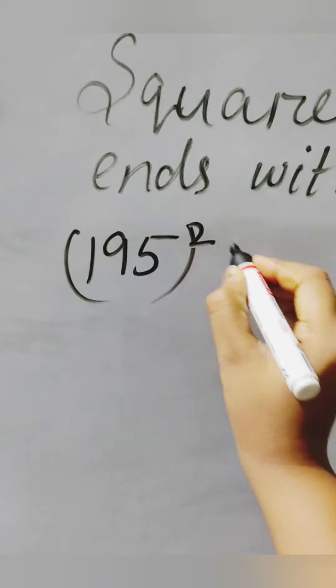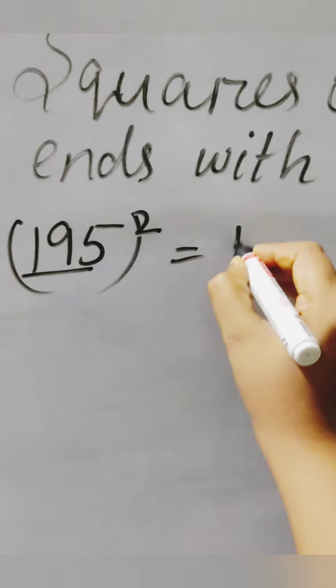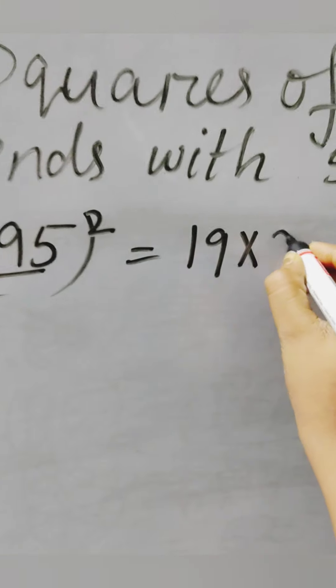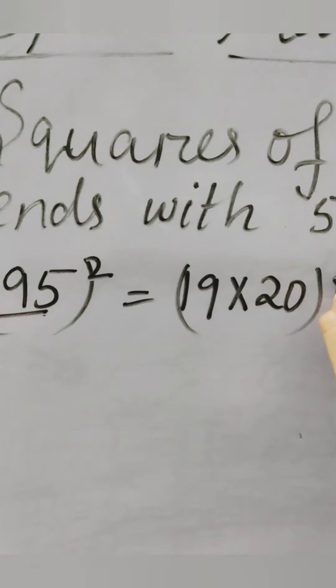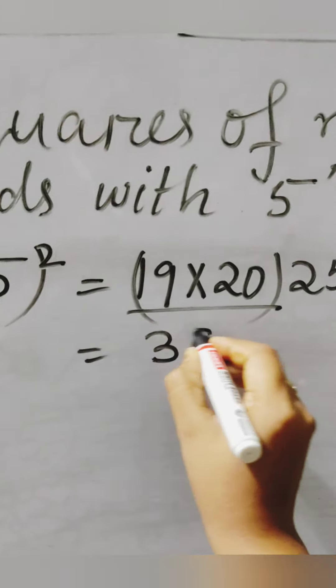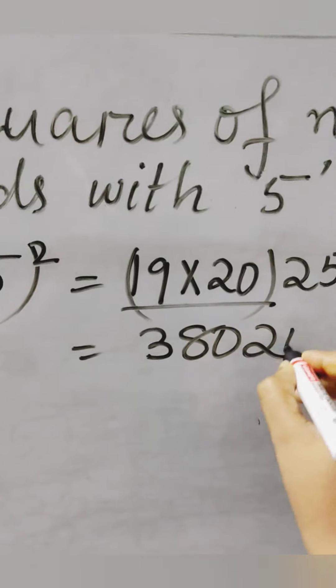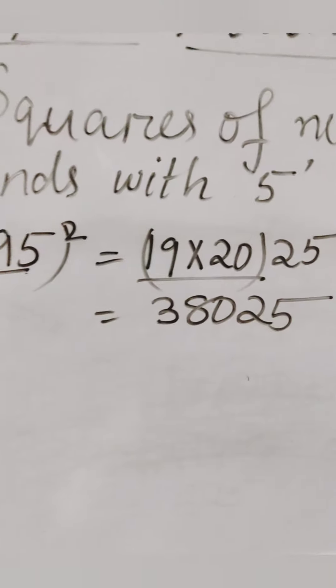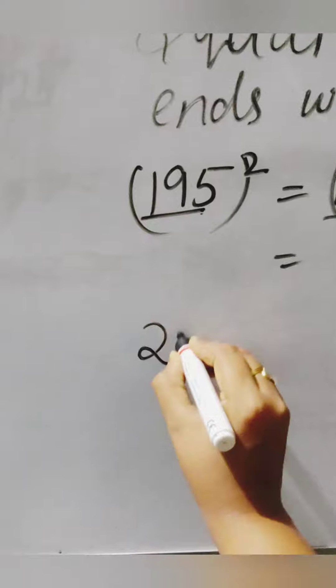Similarly, 195 squared. Hide the digit 5, then you can get the number as 19. After 19, 20 will come. So multiply both of these numbers and write down 25 nearby it. What will we get? 38,025.